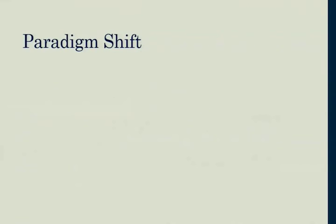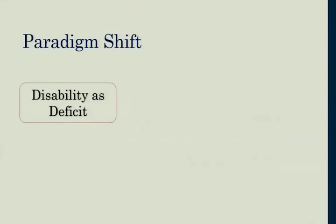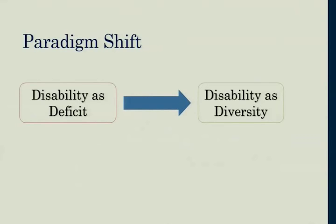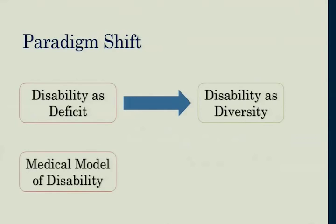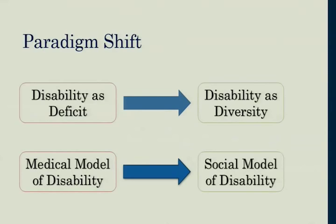The first thing we really need to do is shift our thinking a little bit. This connects to a lot of the experiences Kim talked about - we need to shift our thinking from disability as a deficit to disability as a difference or as diversity. That's really shifting from the medical model of disability, which views disability as a social construction - something that is broken or sick and needs to be fixed or cured.